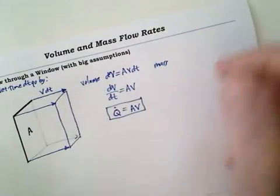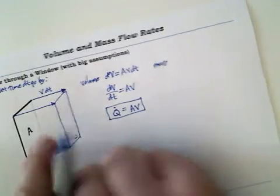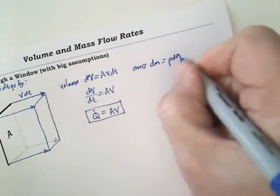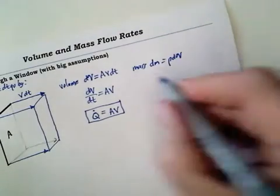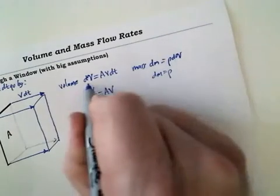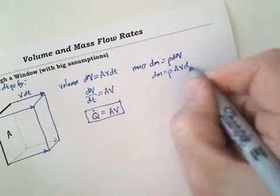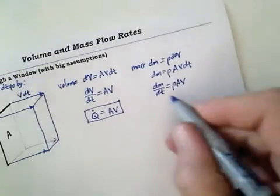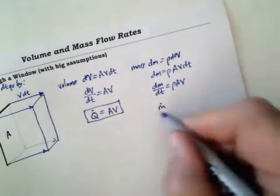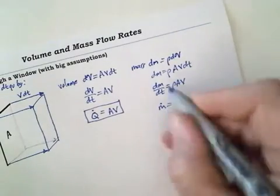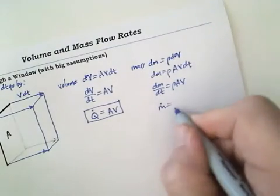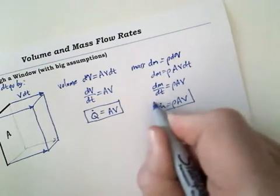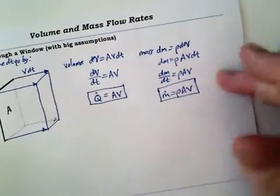If you want to talk about mass flow rate — how much mass is in that box — well, mass is density times volume. So the little increment of mass in the box, dM, equals density ρ times the increment of volume dV. Substituting dV = A·V·dt and dividing both sides by dt gives us ṁ (mass flow rate, change in mass per unit time, kilograms per second) equals ρ·A·V — density times cross-sectional area times velocity. That's our other big result.